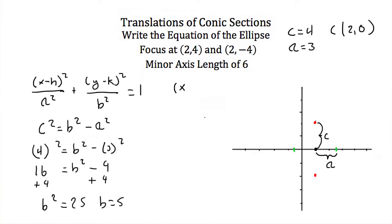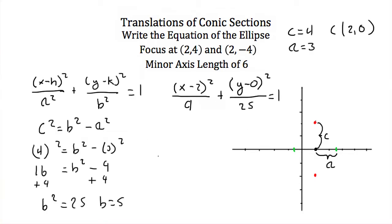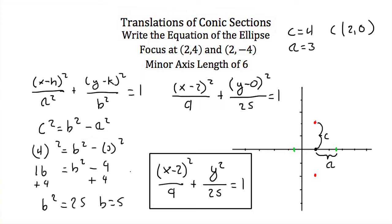Now I can write the equation. This is (x - h): our h is 2, so (x - 2)² over a² where a is 3, so that's 9. Plus (y - k): our k is 0, so (y - 0)² over b² where b is 5, so that's 25, and that equals 1. Simplified: (x - 2)²/9 + y²/25 = 1. And that's the equation of our ellipse.